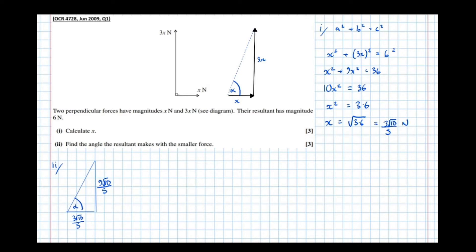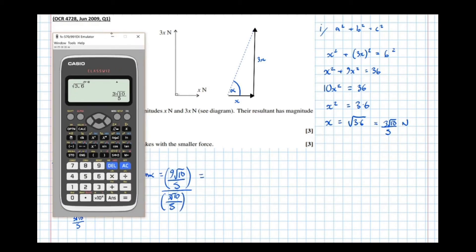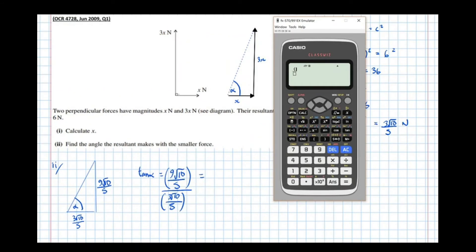We want to find alpha. Well, we know tan alpha is opposite over adjacent. So equals 9 root 10 over 5 over 3 root 10 over 5. Equals. So let's put this in the calculator. 9 root 10 over 5. 9 root 10 over 5 over 3 root 10 over 5. Equals 3. So tan alpha equals 3.